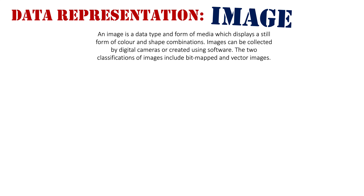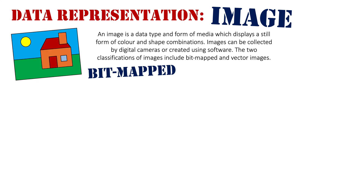Really, a still graphic that has colors and the combination of shapes we classify as an image. Images can be collected by digital cameras or created from scratch using software. There are two classifications of images which include bitmapped and vector images. Firstly, we're going to take a look at bitmapped images — these are the type of images that we make in our paint programs, full of color.